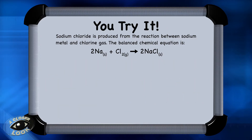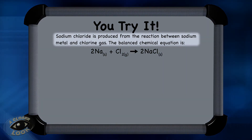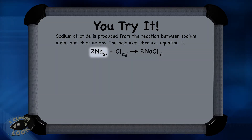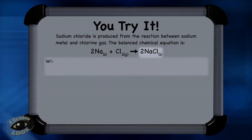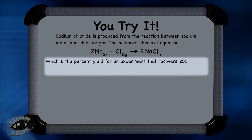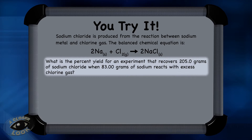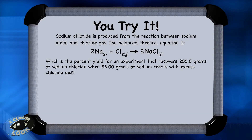Now here's one for you to try. Sodium chloride is produced from the reaction between sodium metal and chlorine gas. The balanced chemical equation shows that 2 moles of sodium react with 1 mole of chlorine to produce 2 moles of sodium chloride. What is the percent yield for an experiment that recovers 205.0 grams of sodium chloride when 83.00 grams of sodium reacts with excess chlorine gas? Press pause and give it a try, then press play and check your answer.